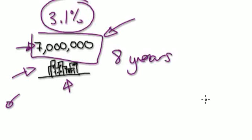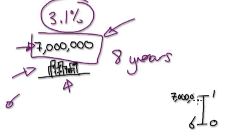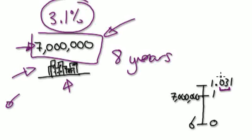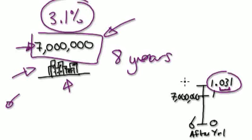So your diagram would look something like this. Original would be 7 million. And then after year 1, it's going to grow by 3.1%. Two digits means 3%, so 3.1 would be this decimal here. After year 1, this would be 7 million times 1.031.